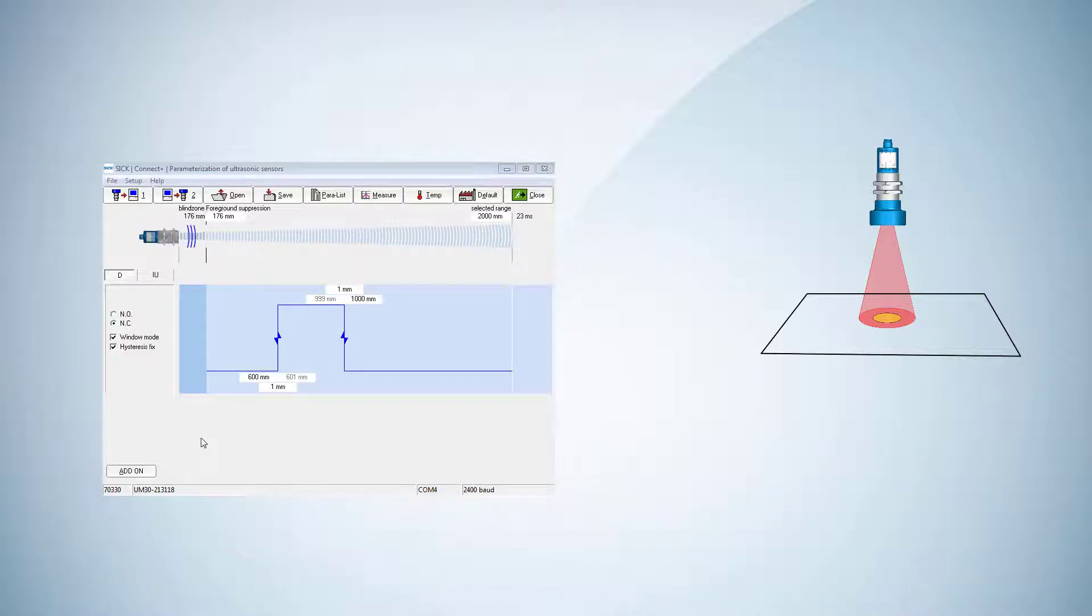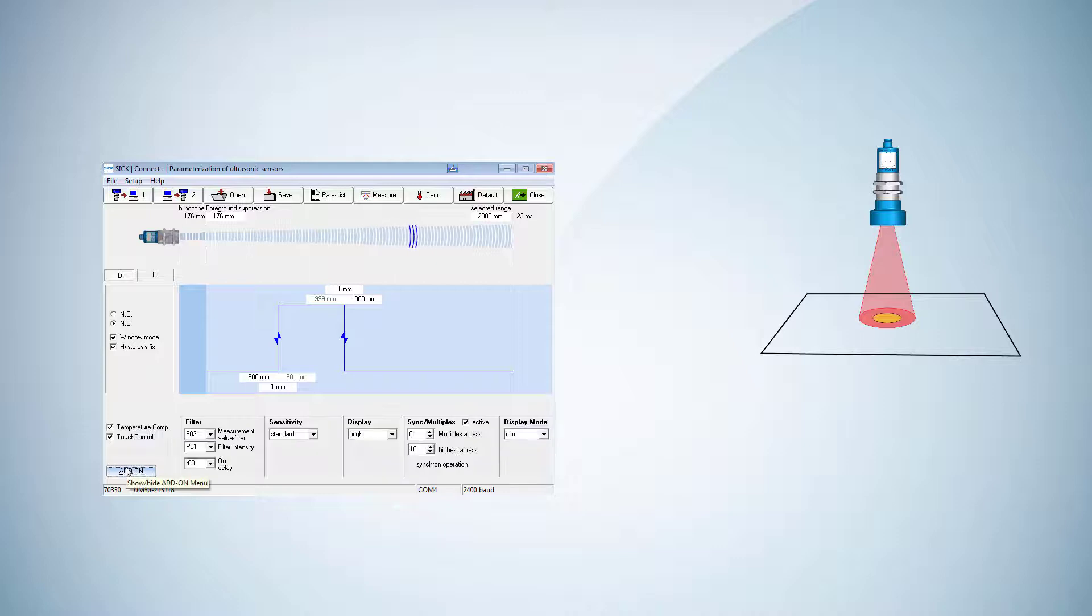After connecting the device, we have to click on add-on to see the advanced options. Then we set sensitivity to variable. Additionally, we now have the option to adjust these values individually.